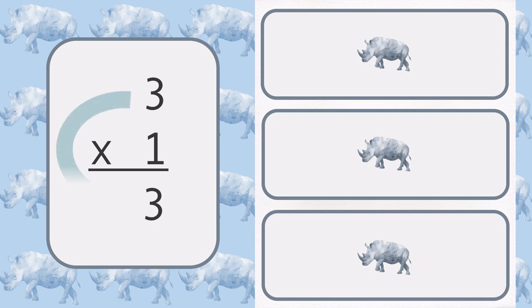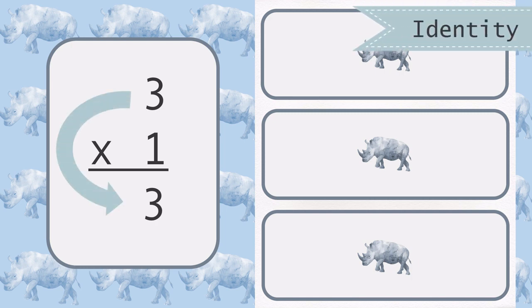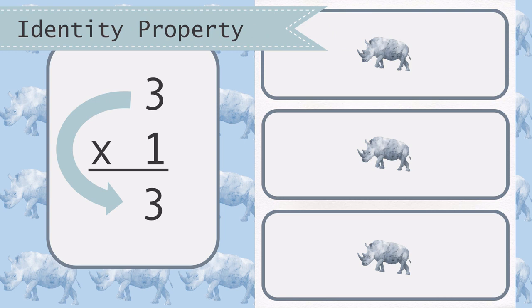3 times 1 is equal to 3. The identity property states that any number multiplied by 1 is that number.